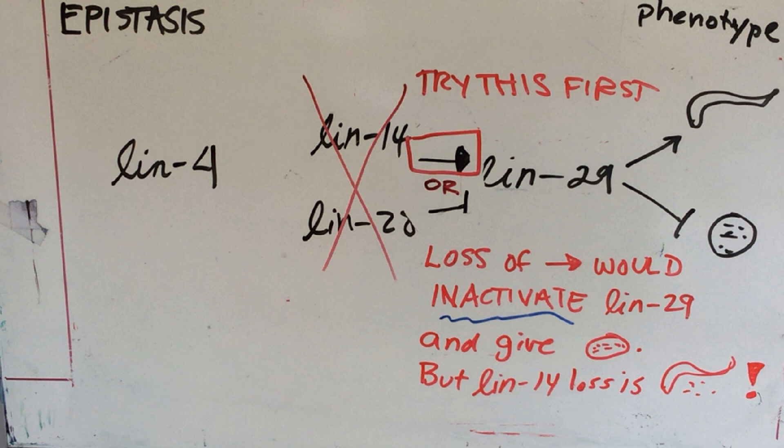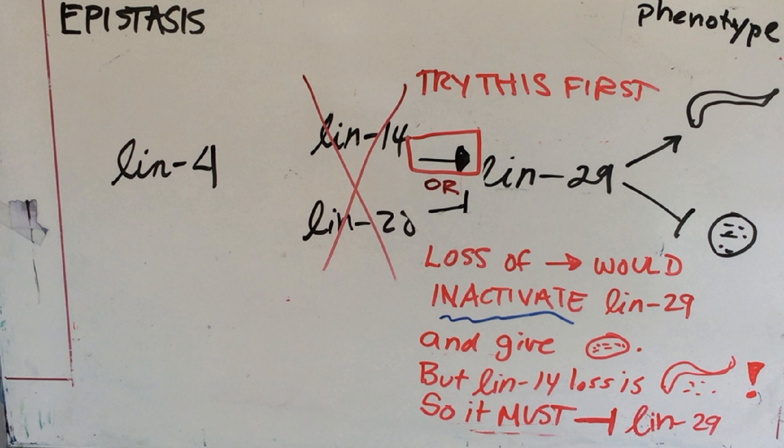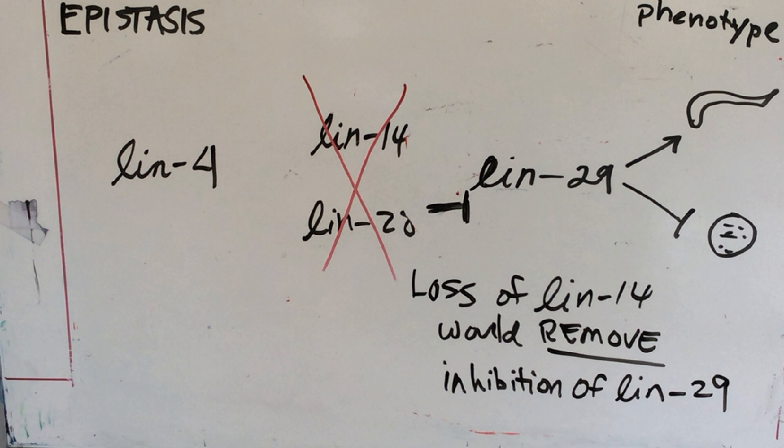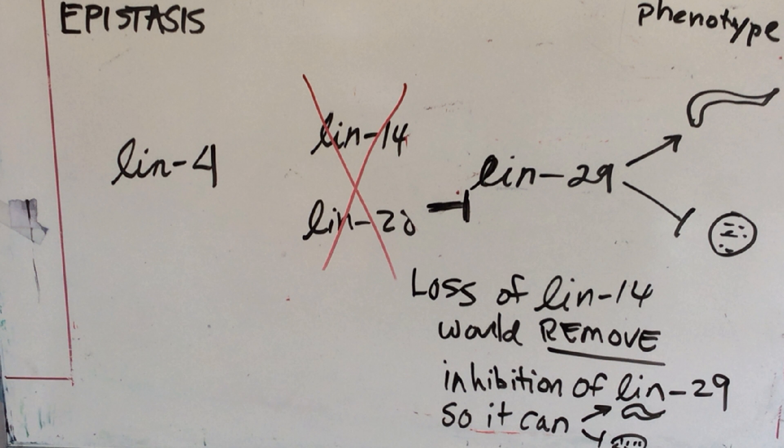So, that must mean that LIN-29 is repressed by the wild type function of LIN-14 and 28. So, we can now ask for the loss of LIN-14, what it would do, and it would remove repression. And so, it looks like it's a repressive arrow.